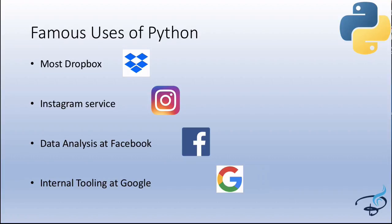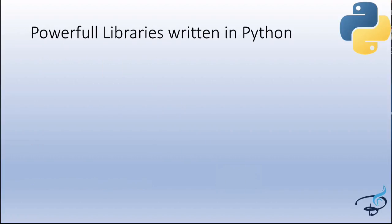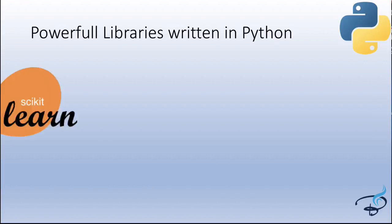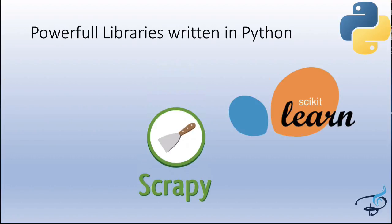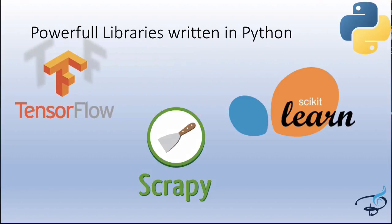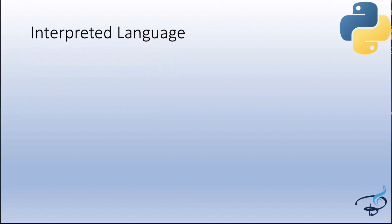Python became so big because it was created as open source and has a huge community where everybody is creating powerful libraries. Some cool and super useful libraries include scikit-learn, Scrapy — which lets you create your own web scraper — and TensorFlow for machine learning. These three are super famous and all written in Python.